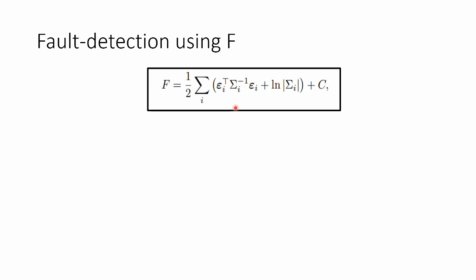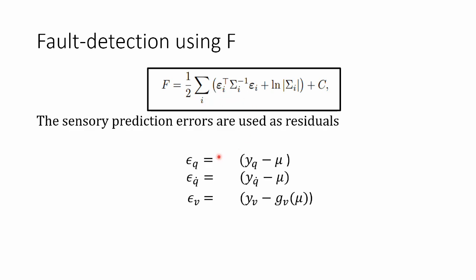But before we go into the benefits, let's talk about how to do fault detection with it. We have all these error terms right here, which are from this quadratic equation. Some of these error terms are the so-called sensory prediction errors. For instance, we have one for the joint encoder, the difference between the belief of where the state is, so mu of x in this case, and yq, which is the measurement from the joint encoder. Same for the velocity and visual encoders.